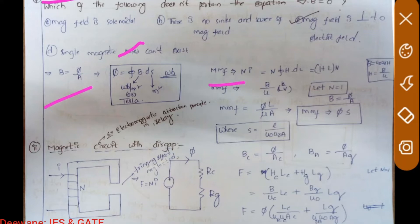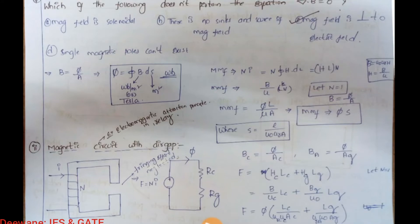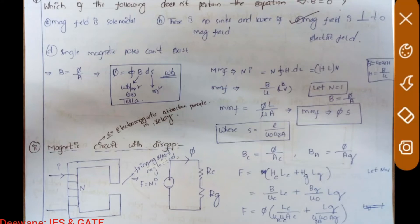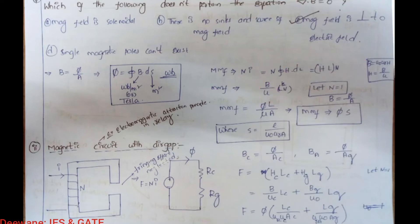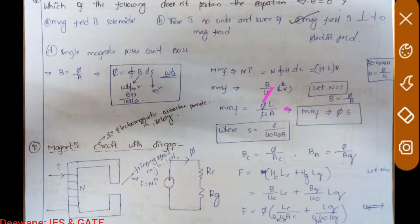MMF equals N·I. From Ampere's law, substituting I = H·dl, it becomes H·l·N. If we take N = 1, and use B = μ₀μᵣH so H = B/μ, then MMF = (B/μ)·l. Substituting B = phi/A, we get MMF = phi × S, where S = l/(μ₀μᵣA). This is the reluctance formula.